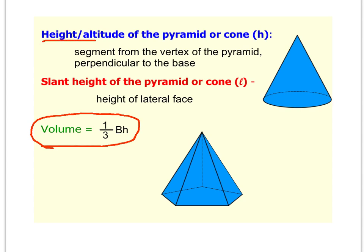Notice here it says that there's a height, which is also referred to as an altitude, of the pyramid or cone. And that is the segment that's drawn from the vertex of the pyramid and perpendicular to the base. So on this cone, this right here would be the height or the altitude of the cone.